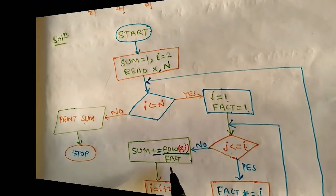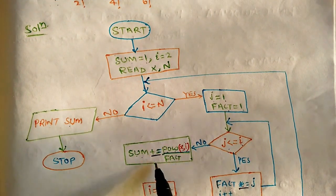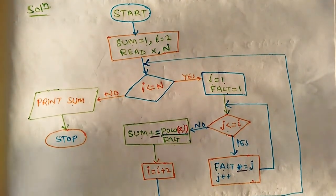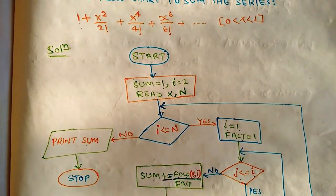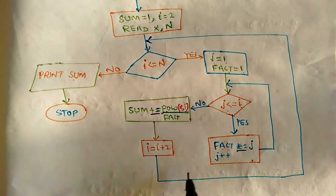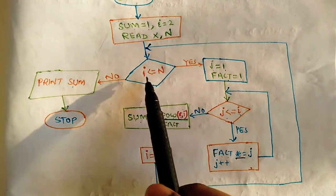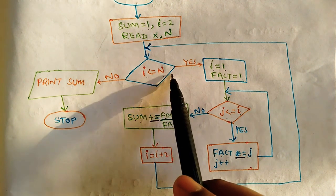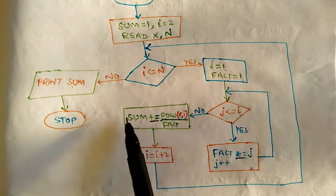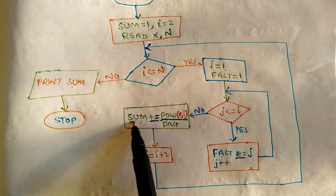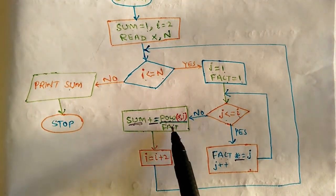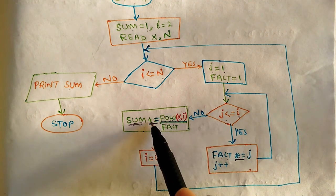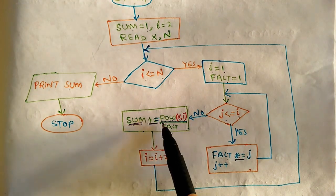This way our sum gets updated. Now the value of i is incremented: i = i + 2, as we mentioned at the beginning. The series terms are x⁰/0!, then x²/2!, then x⁴/4! and so on, so we always increment by 2. Then we go back and check the condition i ≤ n again. If true, the same work repeats and sum is added. The sum retains its previous value and the new term is added to it each iteration.